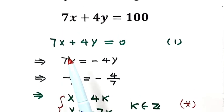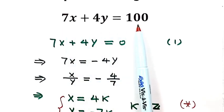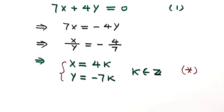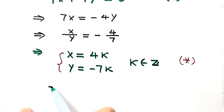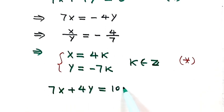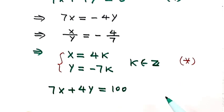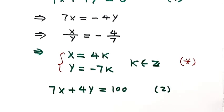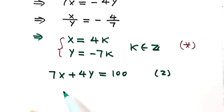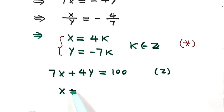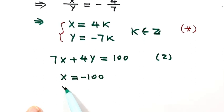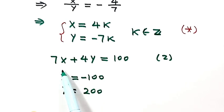Next, we're going to start from the original equation: 7x plus 4y equals 100. Let's label this as equation 2. For this equation, we just need to find one particular solution. For example, x equals negative 100 and y equals 200 is one solution of this equation.